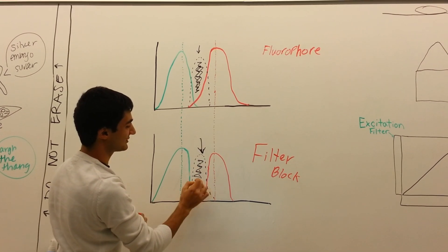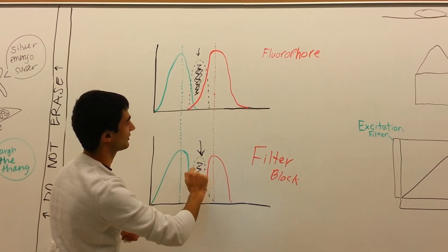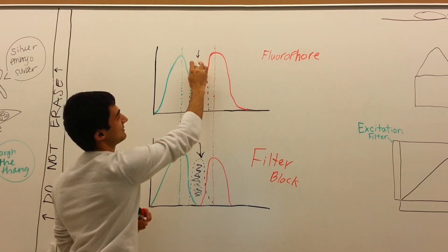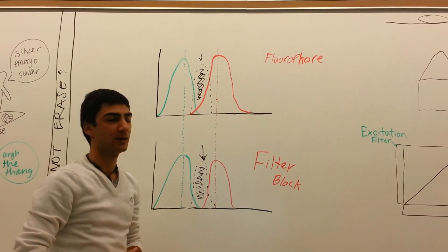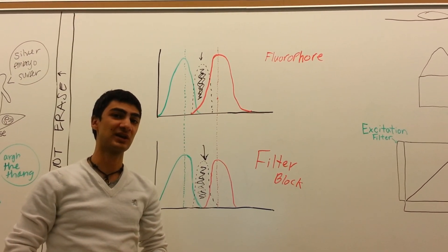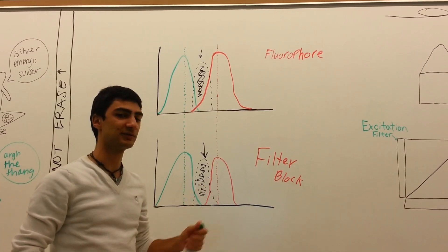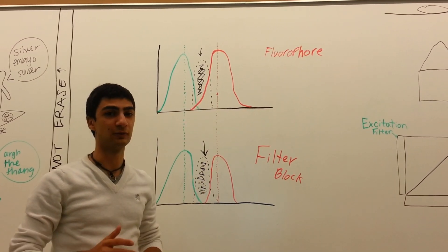If the filter block allows light from this area to enter, then it will not be exciting the specimen at the wavelength that you want. This is why it is very important to understand the importance of matching your filter block to your fluorophore.